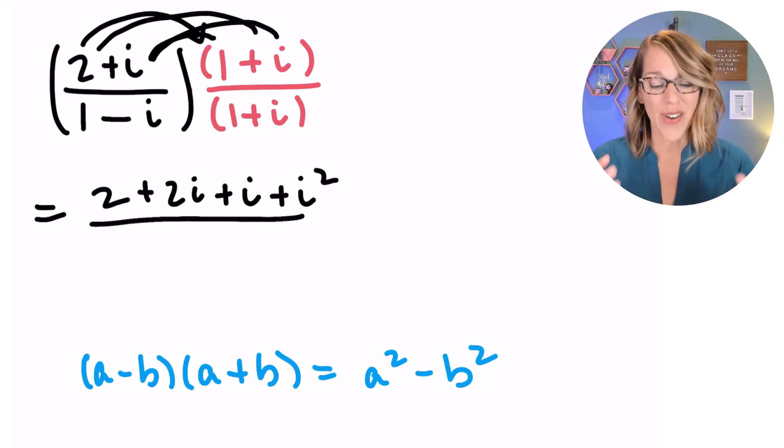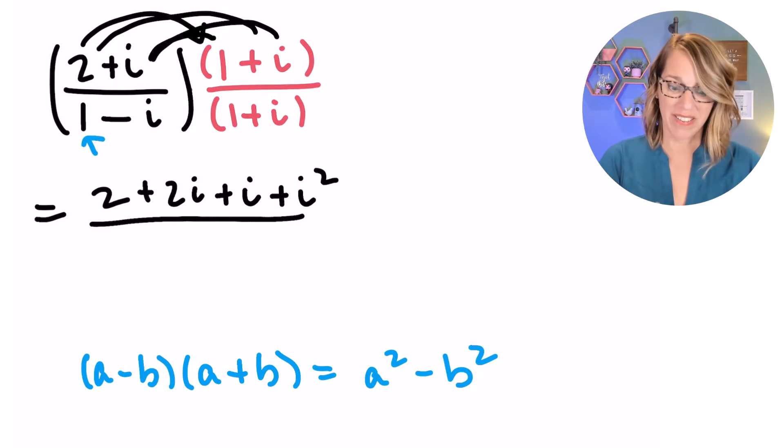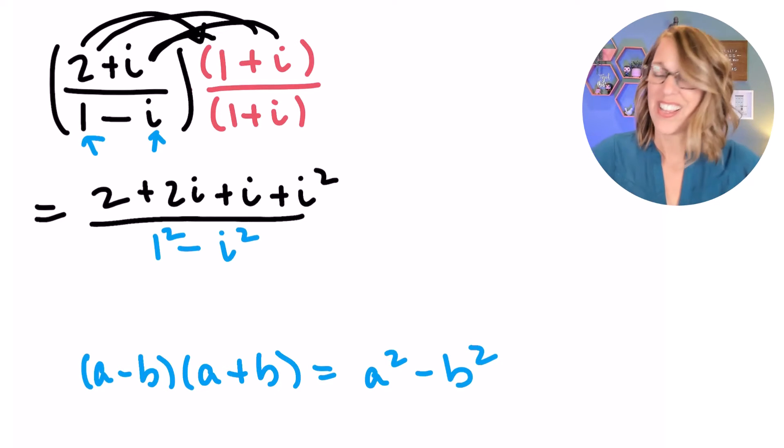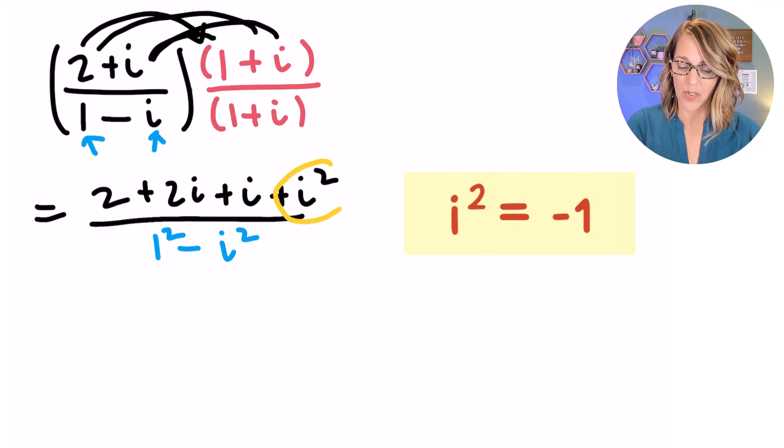So instead of FOILing it out, all I need to do is square my A, which is 1, minus my B, which is I. So I end up with 1 minus I squared, really, minus I squared.